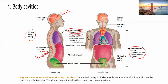The pericardial cavity is the small space around the heart — a tiny space between two membranes. We'll cover this more in the cardiovascular system. Similarly, the lungs have a pleural cavity — again, a very small space between two membranes.